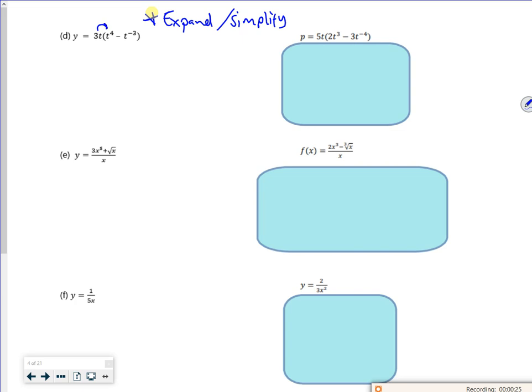Right, so what have we got? I've got 3t times t to the 4, so that's 3t to the 5. I've got 3t times my minus t to the minus 3, so that's minus 3t to the minus 2. Be careful, you've not differentiated. All you've done is times it. So that becomes 3 times 5, so that's 15t to the 4. Then it becomes minus 3 times minus 2, which is plus 6t to the minus 3. There, I hope that wasn't too fast.